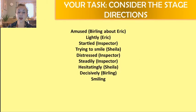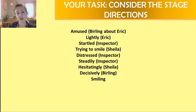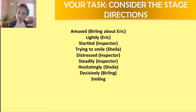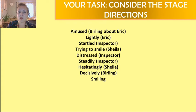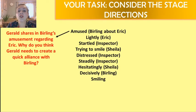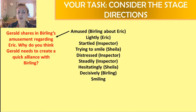We're going to look at five of these stage directions in more detail — considering what they actually tell us about the character of Gerald. With your revision card, write Gerald Croft on one side, flip it over, and then write down these one or two word quotes with a bit of annotation as to what they mean. Starting off with 'amused' — Gerald shares in Mr. Birling's amusement regarding Eric. Why do you think Gerald needs to create a quick alliance with Birling?